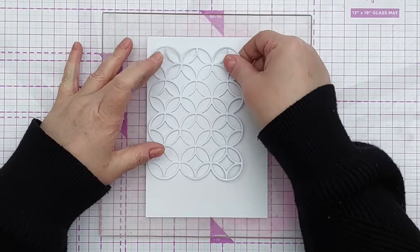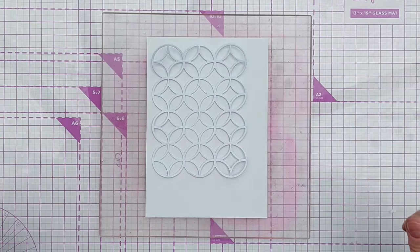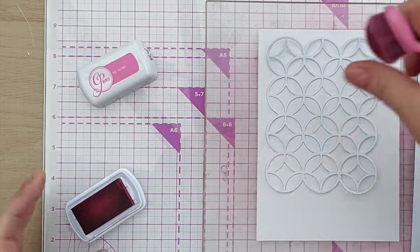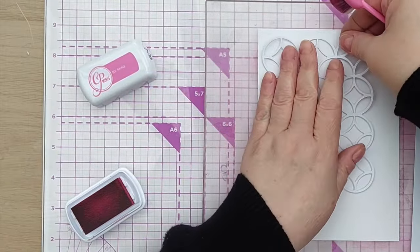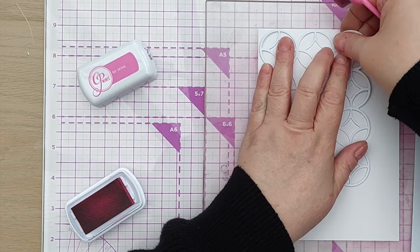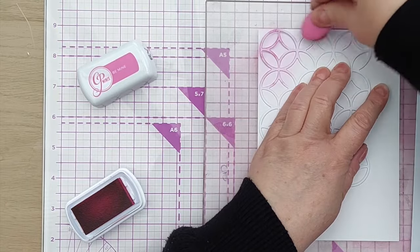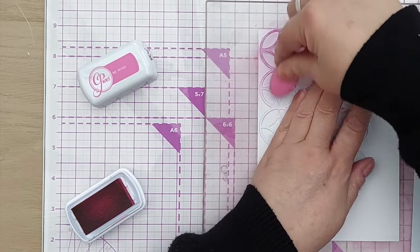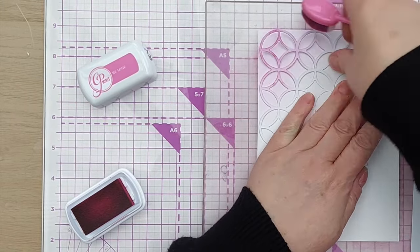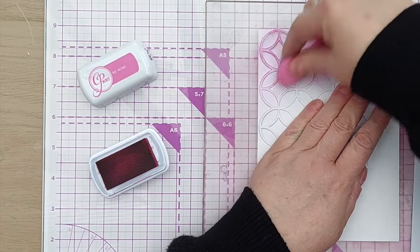So I've got a piece of mixed media paper on my grip mat and I've cut a stencil out of smooth white cardstock with one of my cutting dies. I'm using this as a mask stencil to add some Catherine Pooler inks onto my mixed media paper.